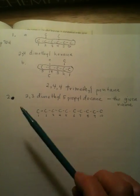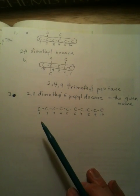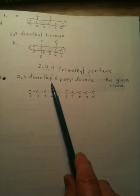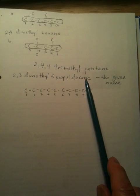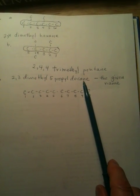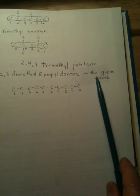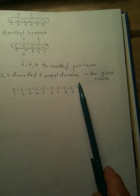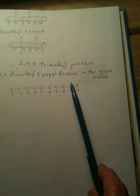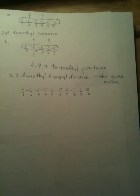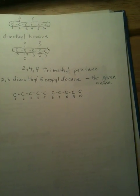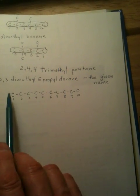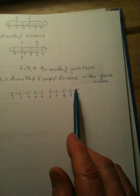Now in this one, I've already started writing down what we were given, and what we were given was the standard name for this particular compound. And so I've written down here that that's the given name. Now when you're doing the structure from the name, the easiest thing to do is start with the longest chain and draw that first. So that's what I've done right here. This is decane, so there should be ten carbons in the chain.